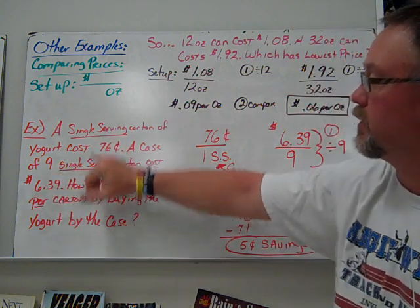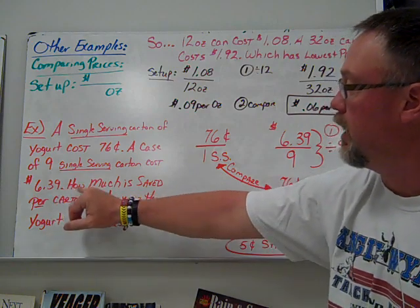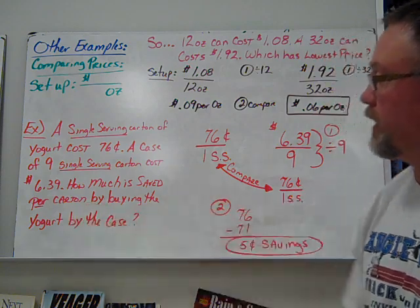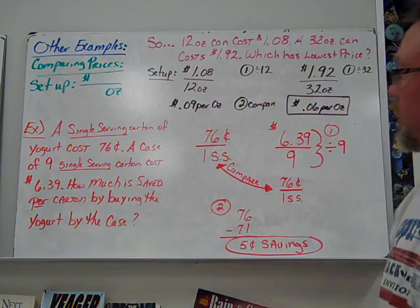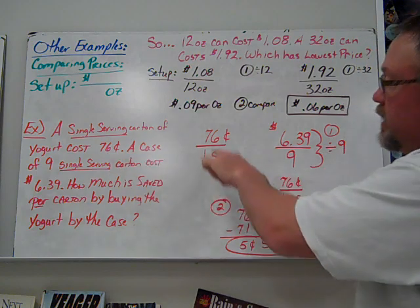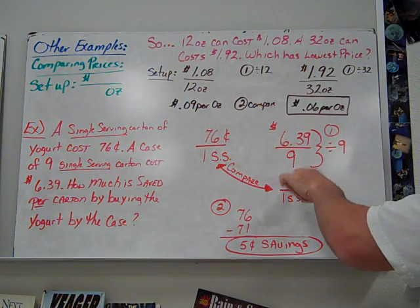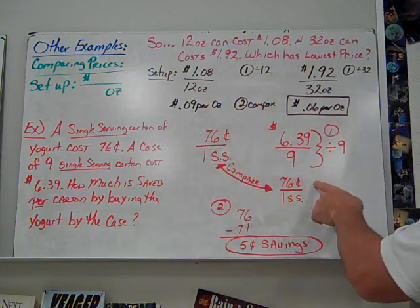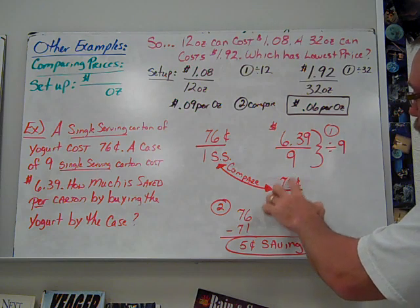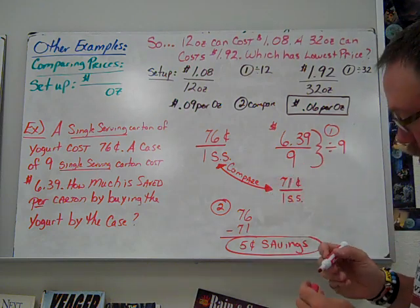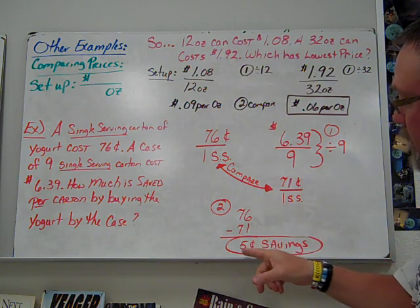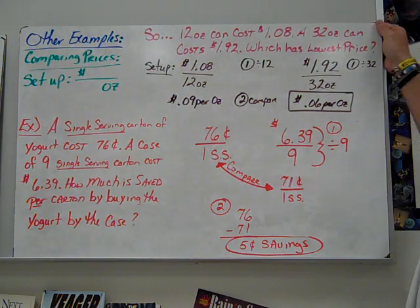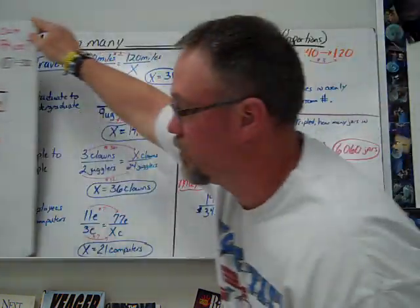Another one: a single serving carton of yogurt costs $0.76. A case of 9 single servings costs $6.39. How much is saved per? We're going to divide to see if buying by the case is cheaper. Setup is $0.76 for one single serving carton, $6.39 for a case of 9. Divide by 9 to get it down to a unit rate. We find it's $0.71. Subtract: $0.76 minus $0.71, we'd save $0.05 if we buy it as a case lot.